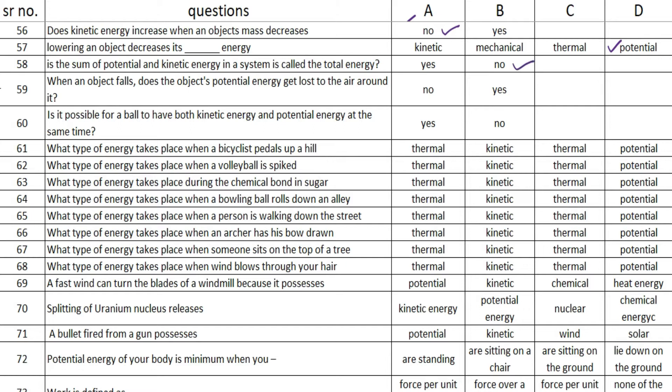option B — no. The next one is: when an object falls, does the object's potential energy get lost to the air around it? The answer is option A — no. Is it possible for a ball to have both kinetic energy and potential energy at the same time? The answer is option A — yes.